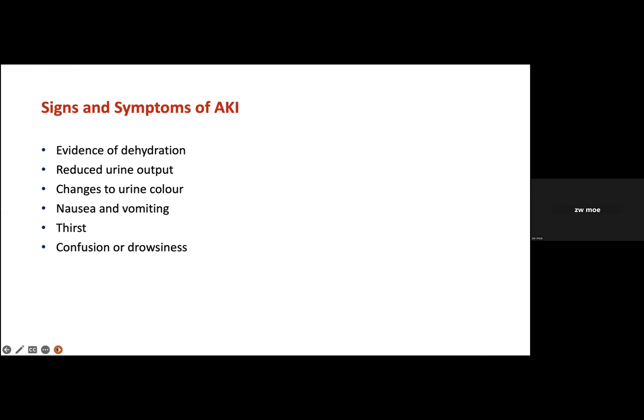Signs and symptoms of acute kidney injury: patients mostly present with dehydration signs — thirst, dry mucous membranes, and confusion. Symptoms of uraemia include nausea, vomiting, and reduced urine output or change in urine colour. When patients show these signs, you need to recognise them during ward rounds and perform early intervention.